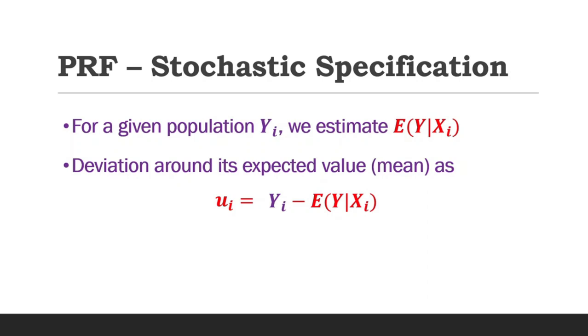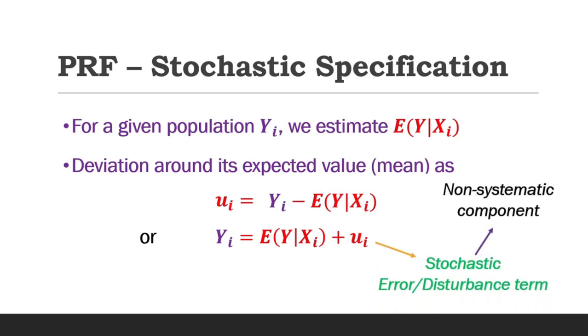By making the population y as subject, this could be written alternatively as y equals expected value of y plus u, where u is known as the usual stochastic error or disturbance term. We refer to u as the non-systematic component of the model. The expected value of y is also referred to as the systematic or deterministic component of the model since it actually determines the behavior of the population y.